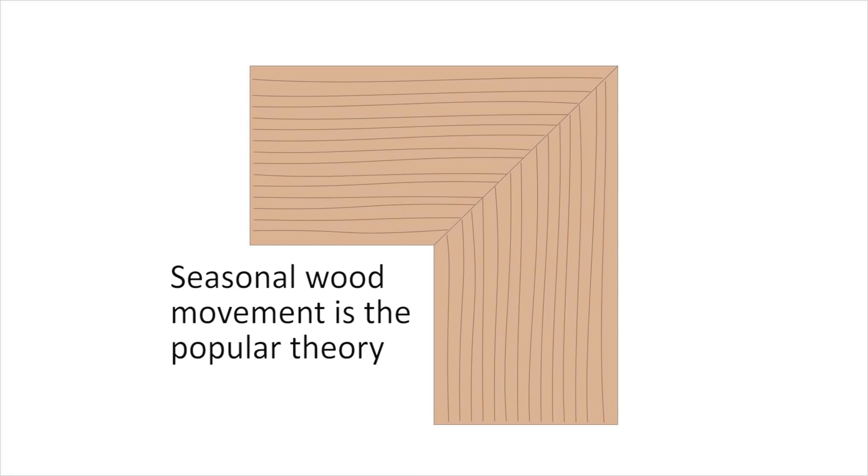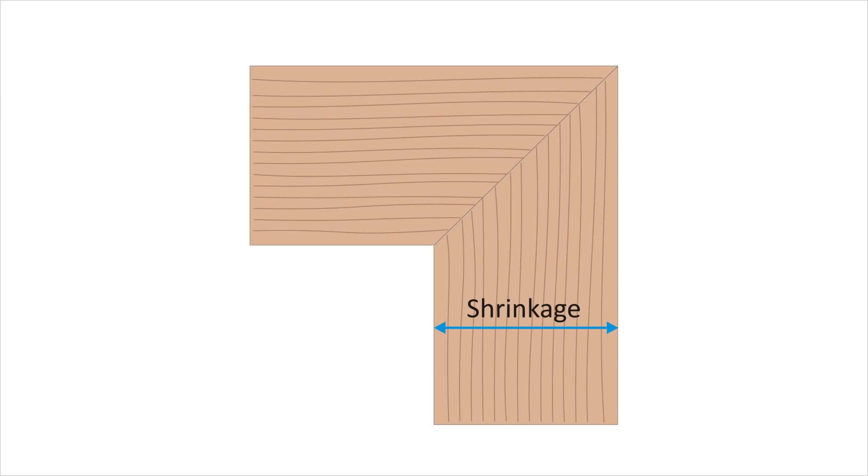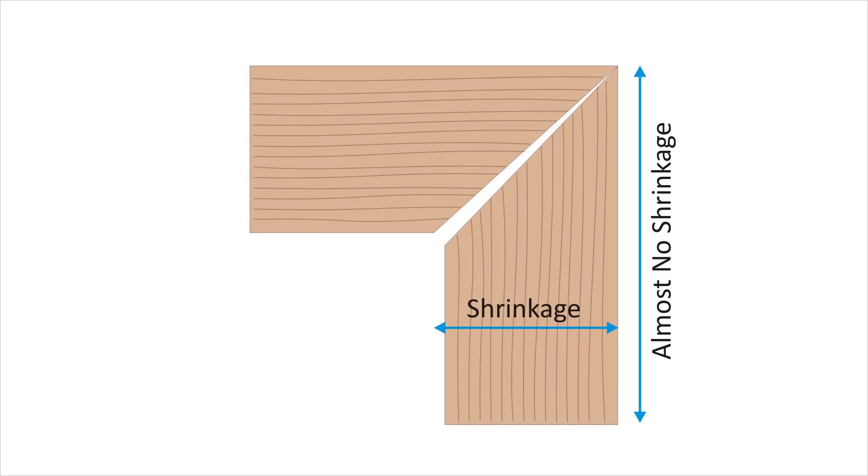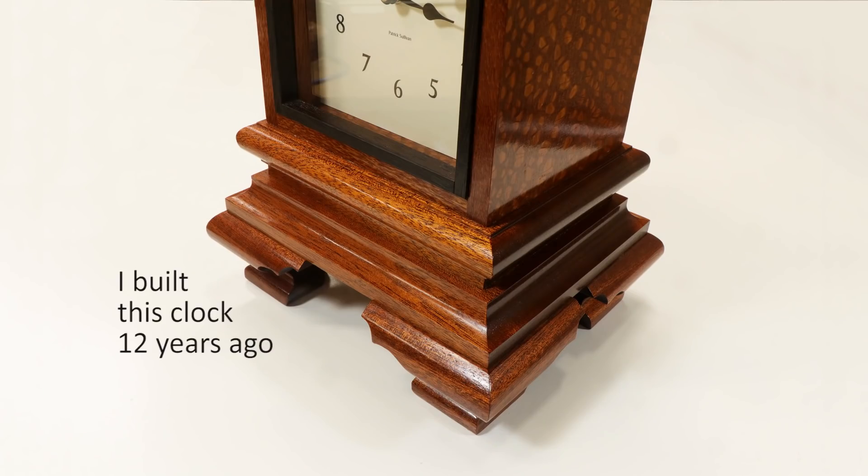Judging from comments on my earlier video, the most popular theory is that seasonal wood movement destroys the glue joint over time. Now, it's indisputable that wood expands and contracts with changes in humidity, so the argument is plausible. I'm not enchanted by this theory, in large part because I have seen so many miters that have survived for 30 years or more with no sign of failure.